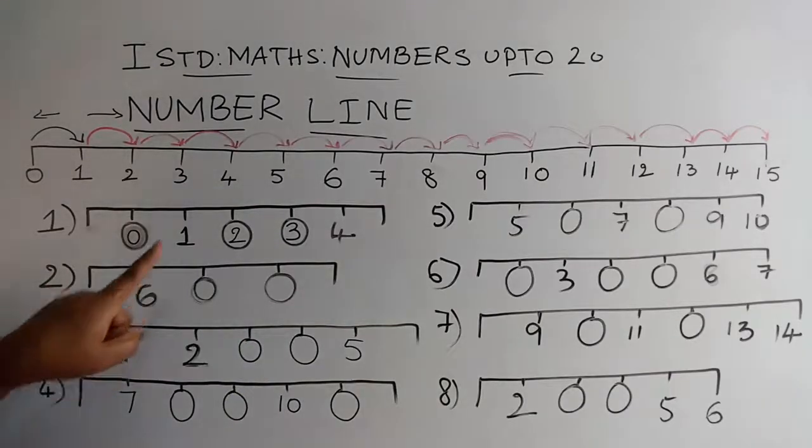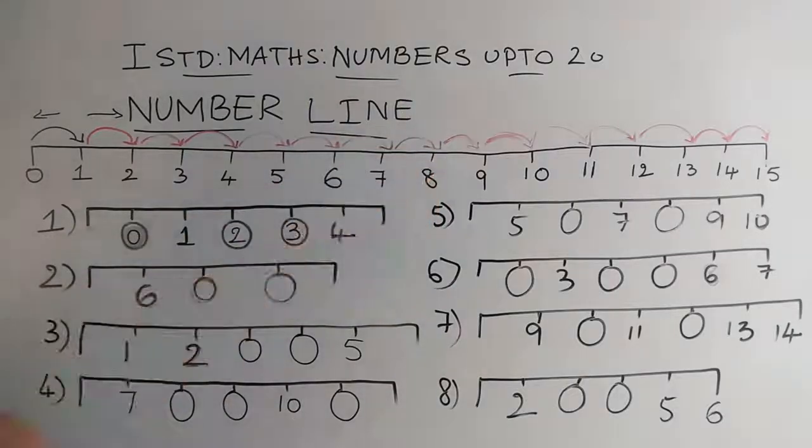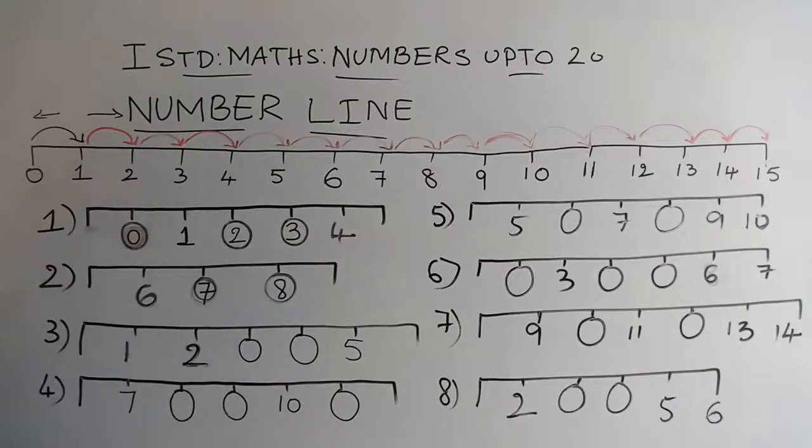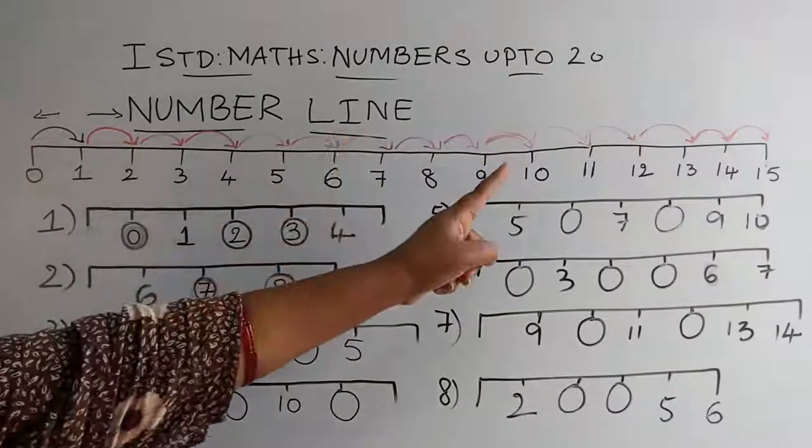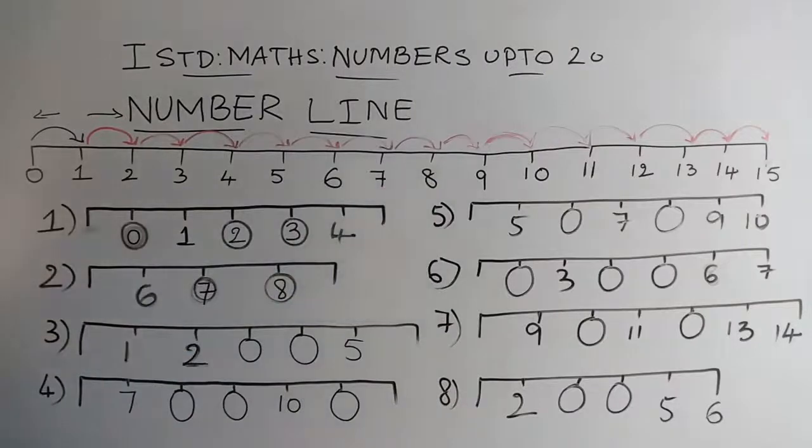Now, the second one. I have 6. Where is 6? After 6, 7, and after that 8. So it is 7 and 8. This is the number line, children. With the help of the number line, we are trying to fill these blanks.